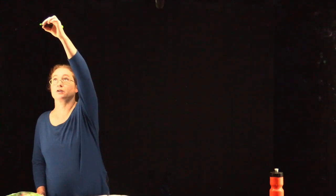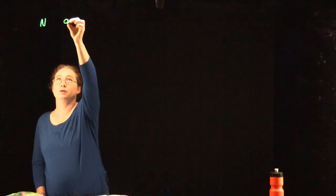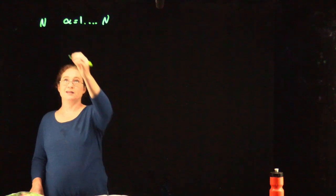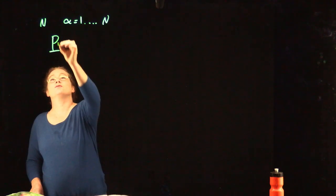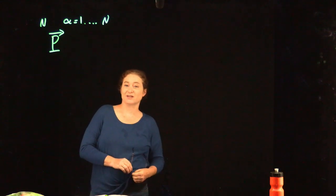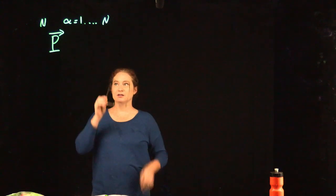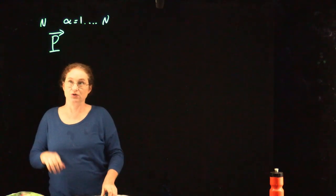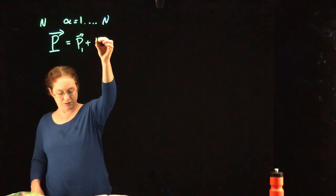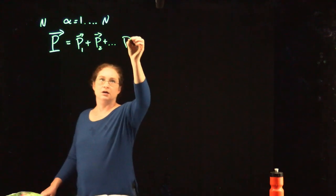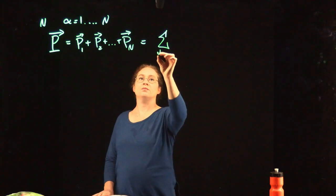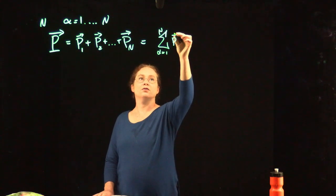We're going to have n particles labeled alpha equals 1 to n. For each different subscript, there's a different particle. We are going to look at the total momentum. When I define the total momentum, that's my capital letters — the total properties of a system. So this is capital P, the total momentum, is equal to P1 plus P2 plus so on up to Pn, which I can write as the sum from alpha equals 1 to n of P alpha.